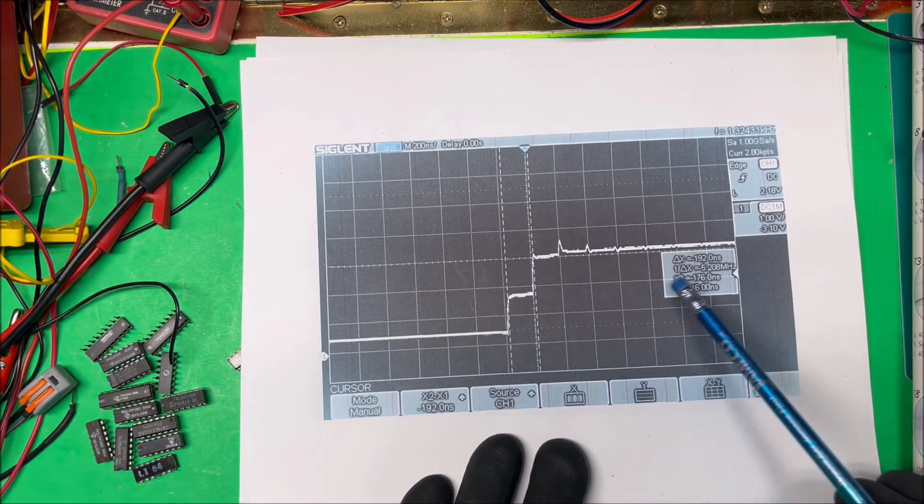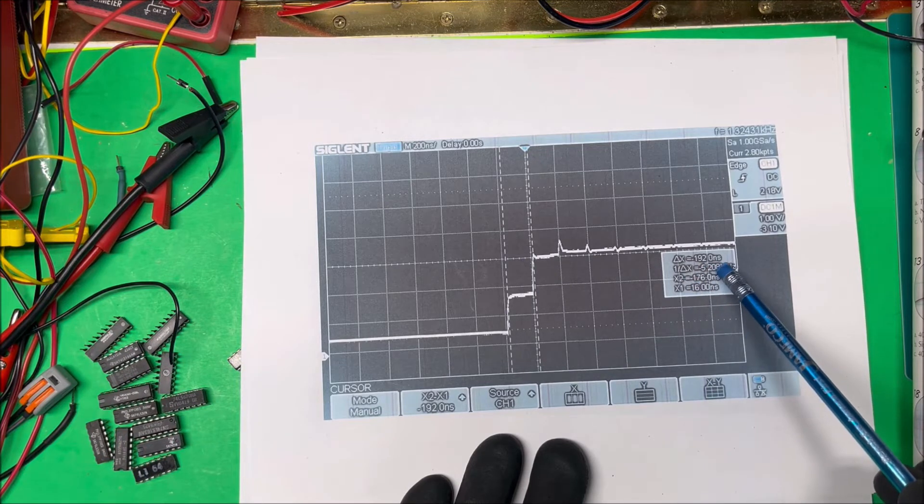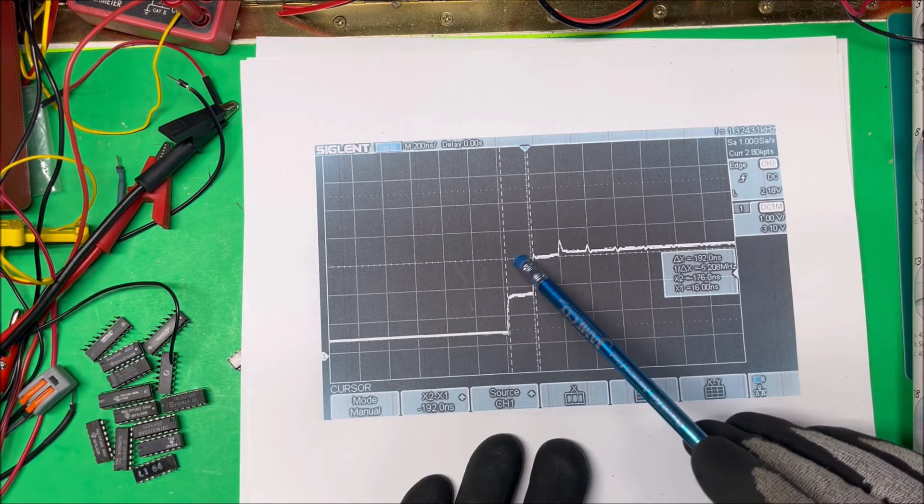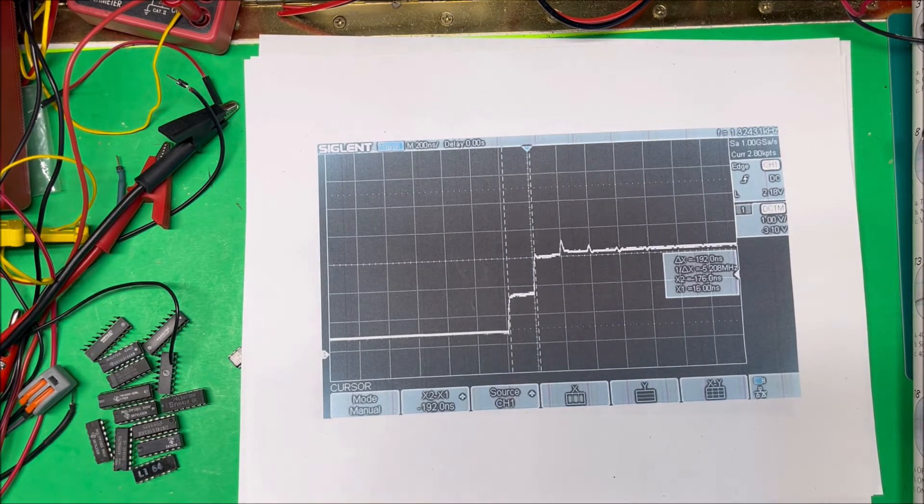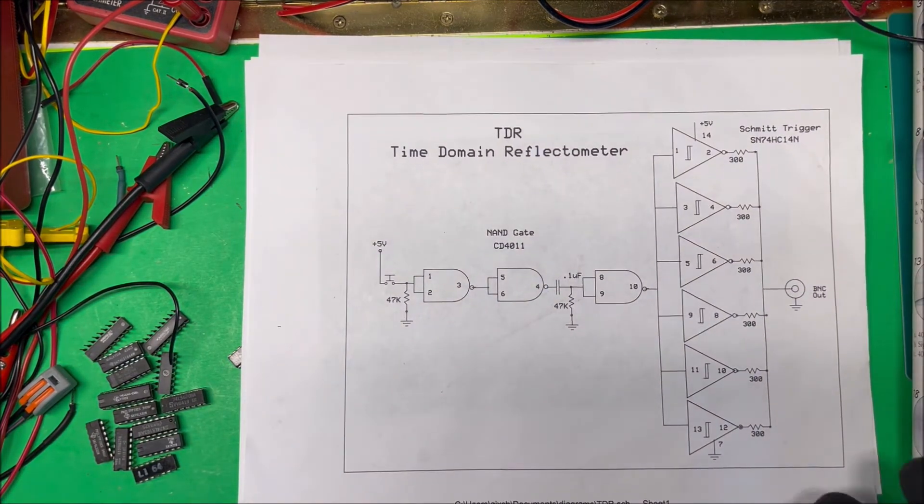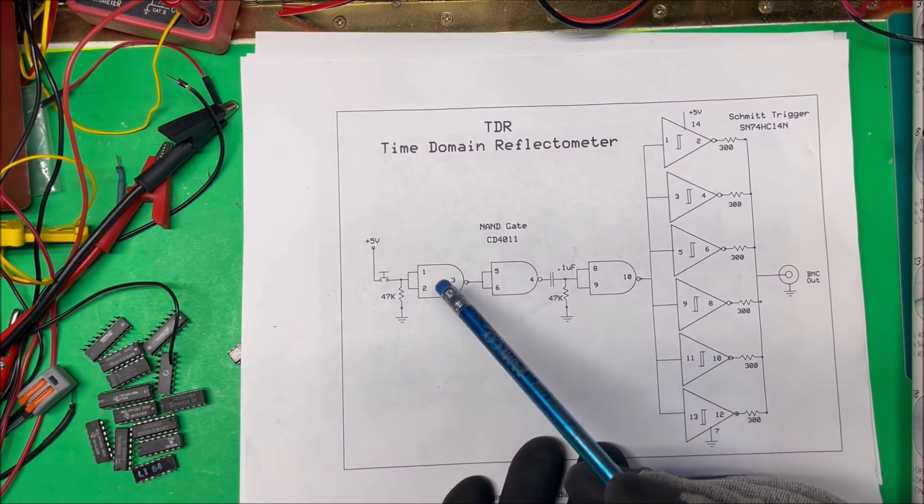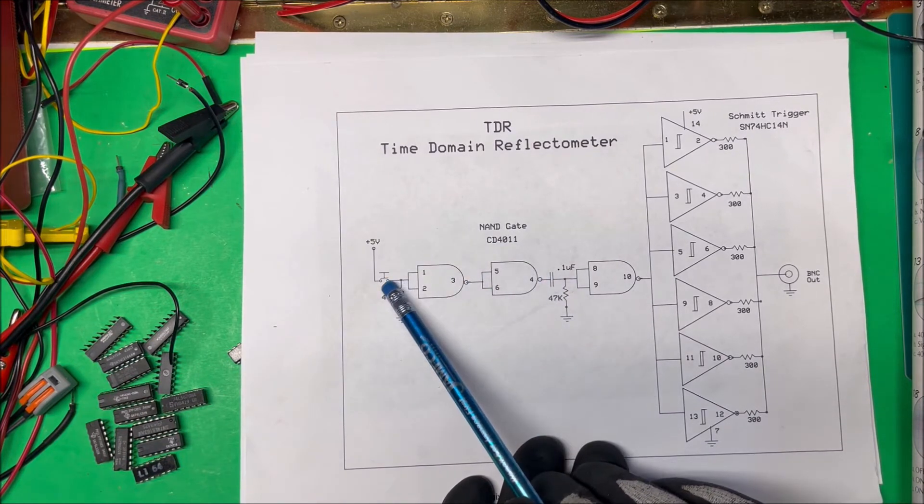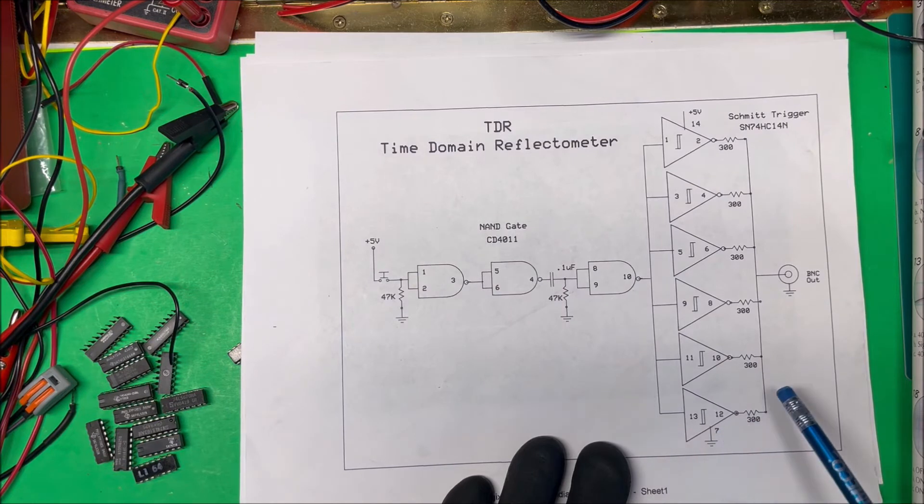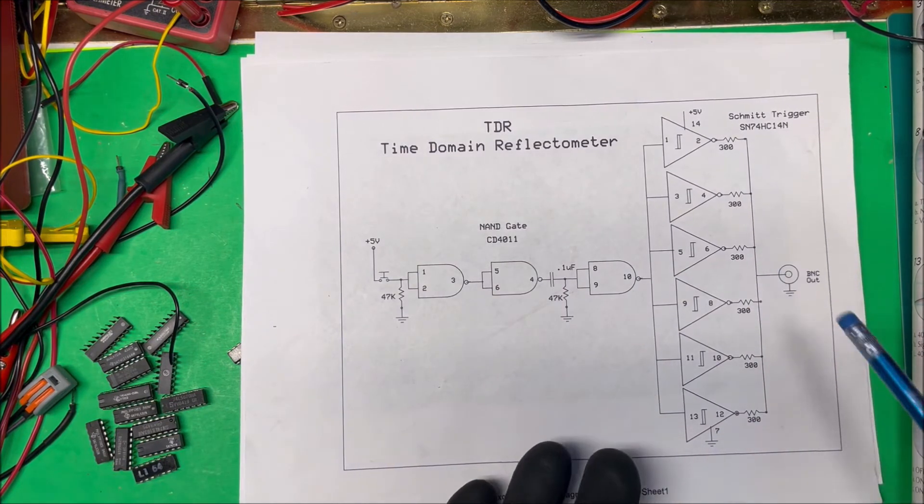And on this one here I got 192 nanoseconds, but you know, hard to tell where you put that at. And then I did another one with a, I just used a NAN gate and a one shot, so it just puts out one pulse, and then I used all six of these with 300 ohms to get 50 ohms out on that.